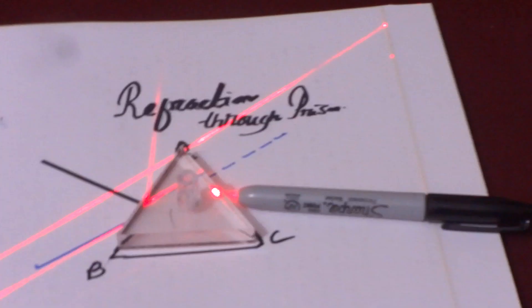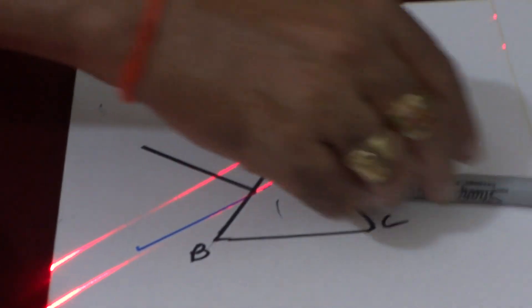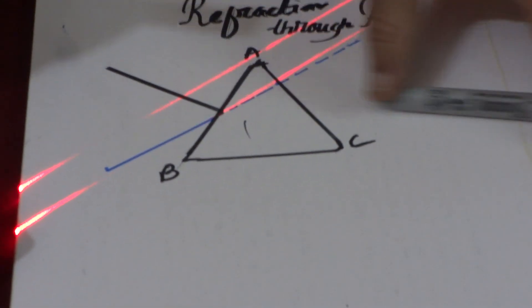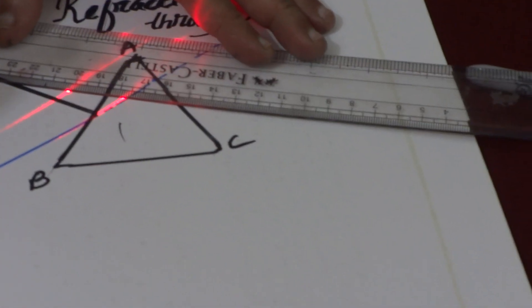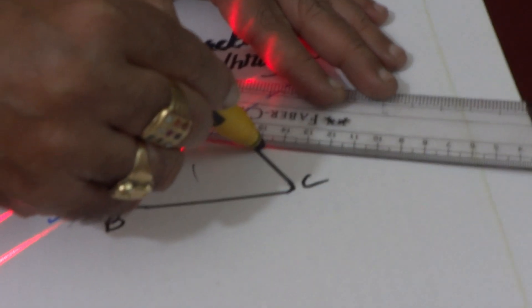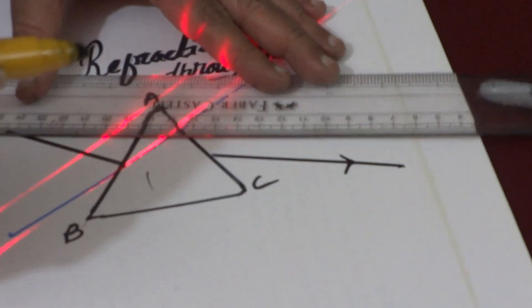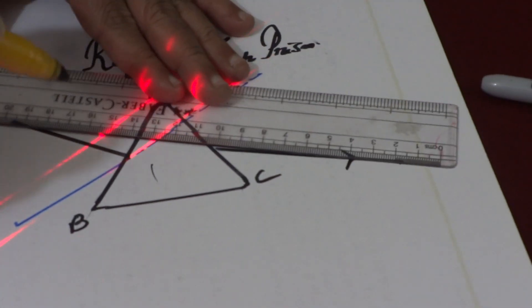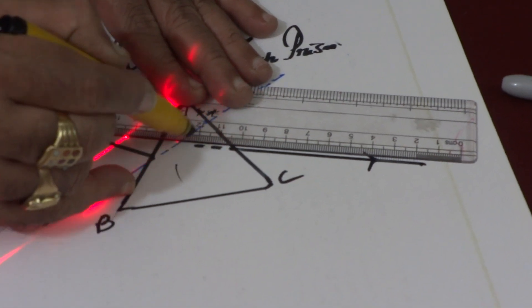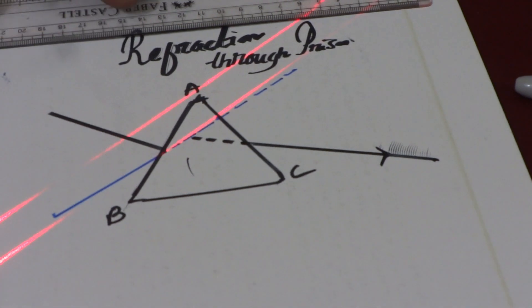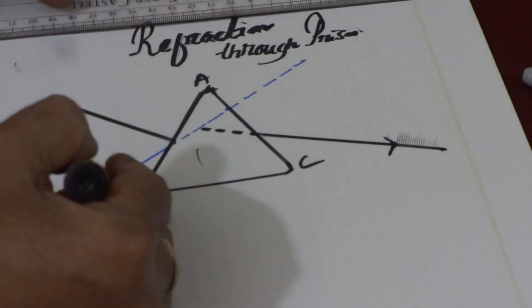So now what I would like to discuss, so here, so this is final emergent ray. Now if you extend that, it meets this blue ray. This is incident ray.